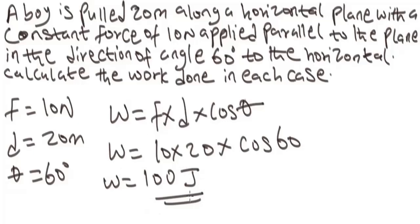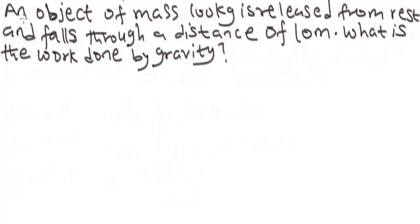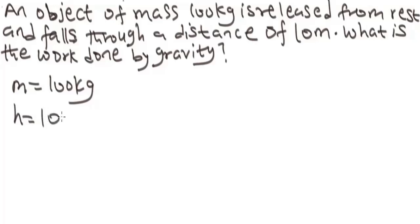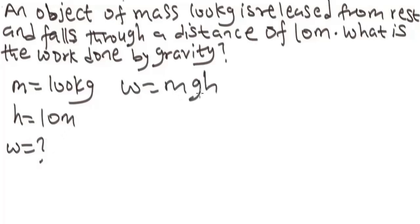Let's solve one more problem on work. This question says: an object of mass 100 kg is released from rest and falls through a distance of 10 meters. What is the work done by gravity? Our parameters: mass is 100 kg and height is 10 meters. We will use W = mgh, where acceleration due to gravity is 10 m/s².